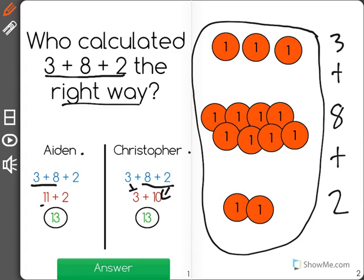So Aiden started by counting these 3 plus this 8 to get 11, and then he added the 2 in. Christopher started by adding 2 and 8 before he added the 3 in.